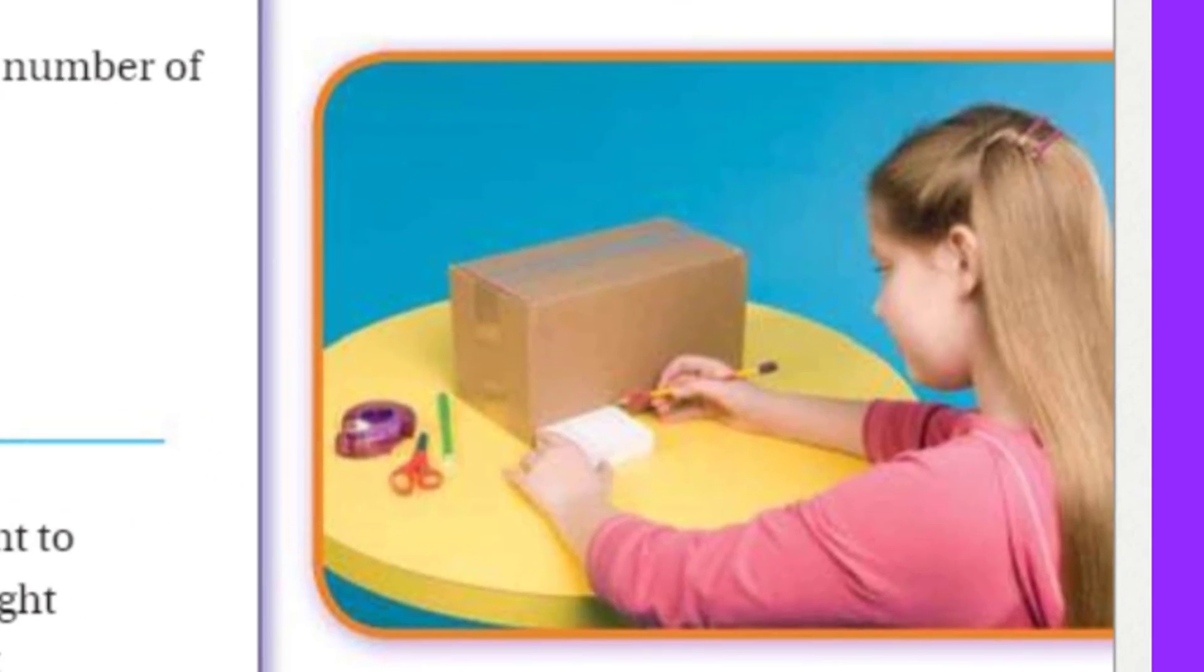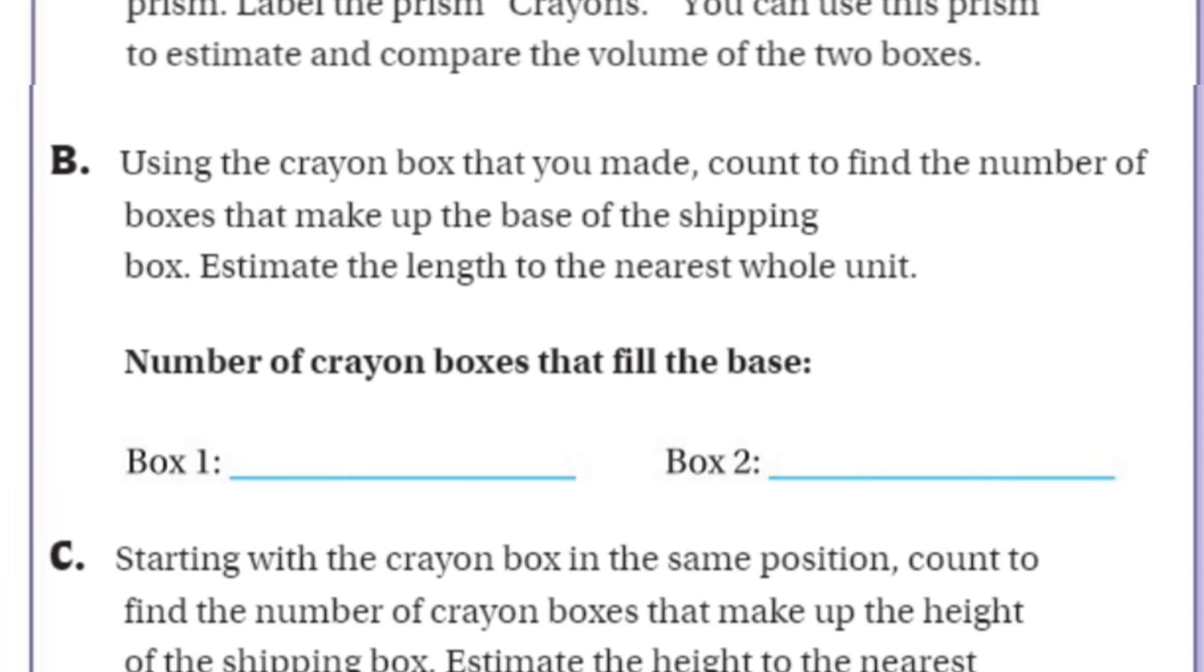You can use this prism to estimate and compare the volume of two boxes. So if we look at B. It says using the crayon box that you made, count to find the number of boxes that make up the base of the shipping box. Estimate the length to the nearest whole unit. So let's just look at this picture over here. See this girl looking at her shipping box. And you can see she's got her measurement tool which was just kind of like a crayon looking box.